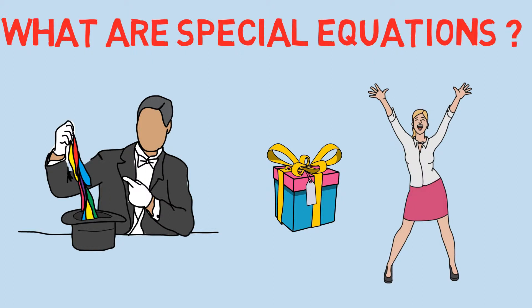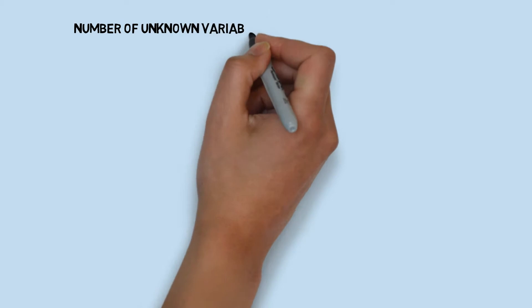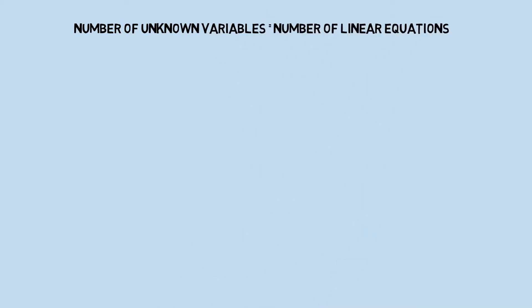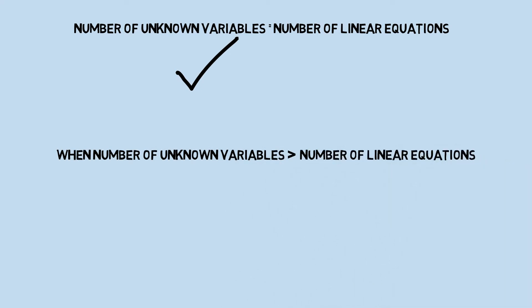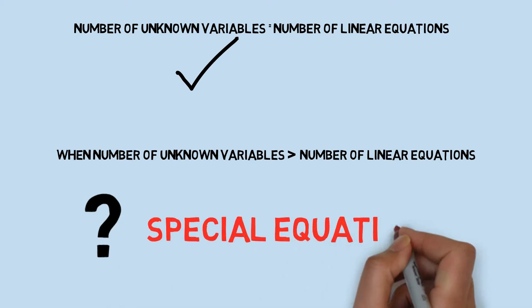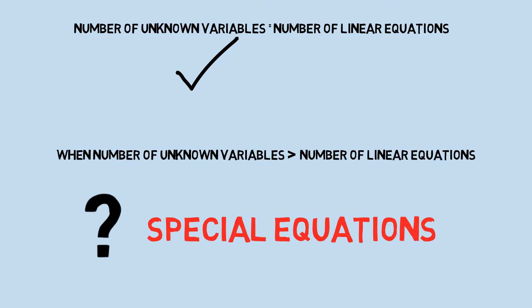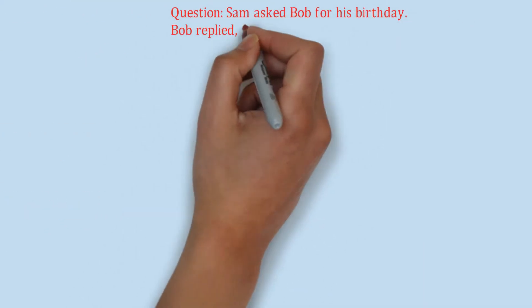We know that when the number of unknown variables equals the number of linear equations, those unknown variables can be determined easily. For example, with two variables and two equations, we can simultaneously solve them to get the values. But what happens when the number of unknown variables is more than the number of linear equations? In that case, the unknown variables cannot be determined normally.